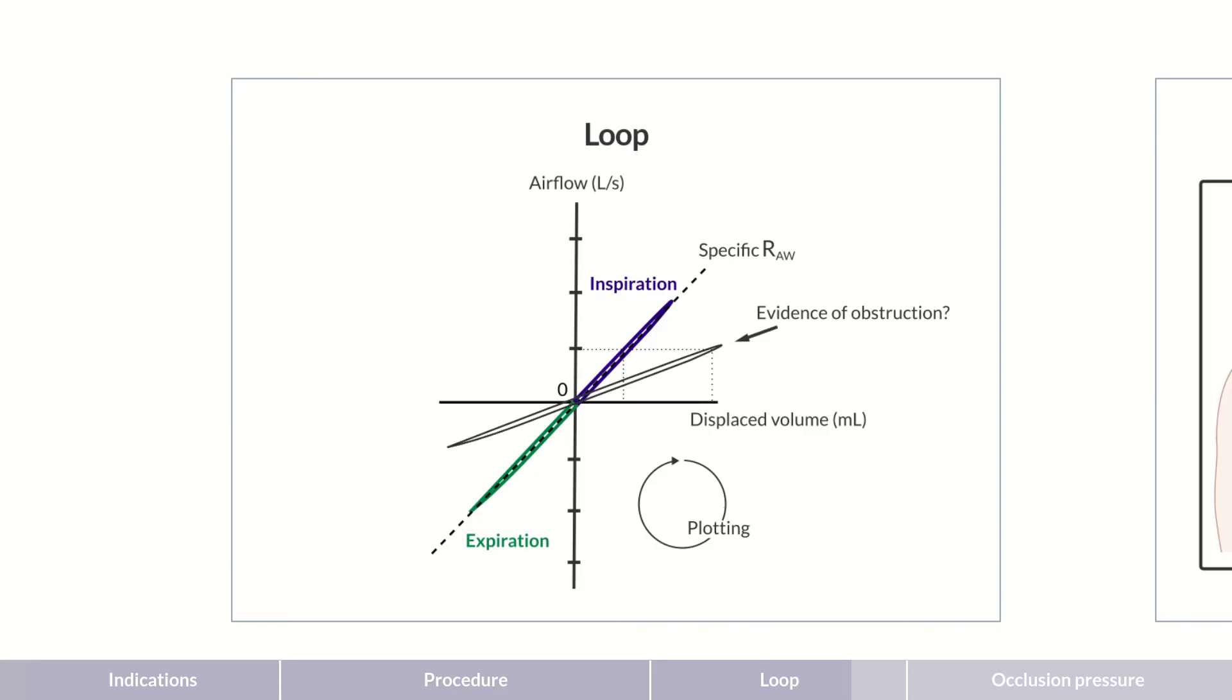However, the specific resistance depends on lung volume. A lung that is twice as large also requires twice as much displaced volume to generate the same airflow as a lung that's half its size.